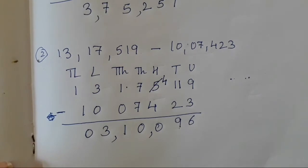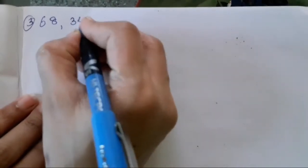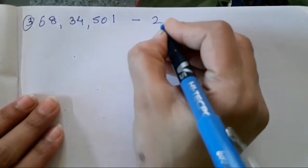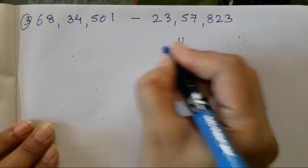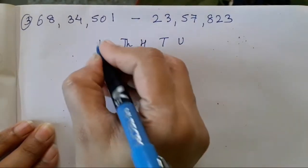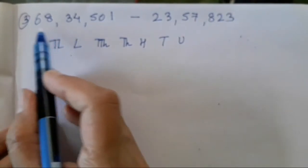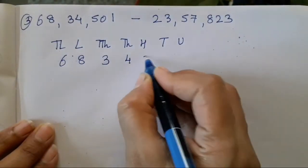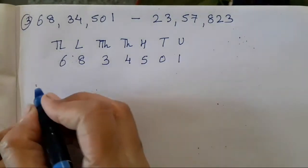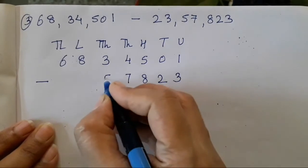Now the third sum is 68,34,501 subtracted with 23,57,823. So units, 10s, 100, 1000, 10,000, lakh and 10 lakh. Over here you will see 68,000, so directly you all can write it. So 68,000, 34,501. Or you all can write it ULTA — that is 3, 2, 8, 7, 5, 3, 2.